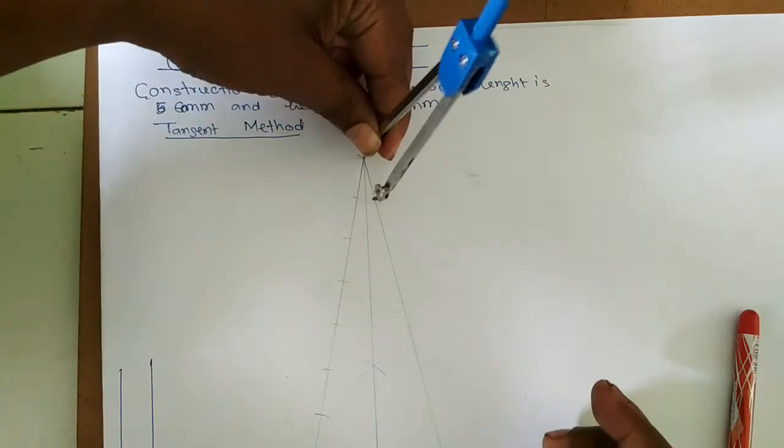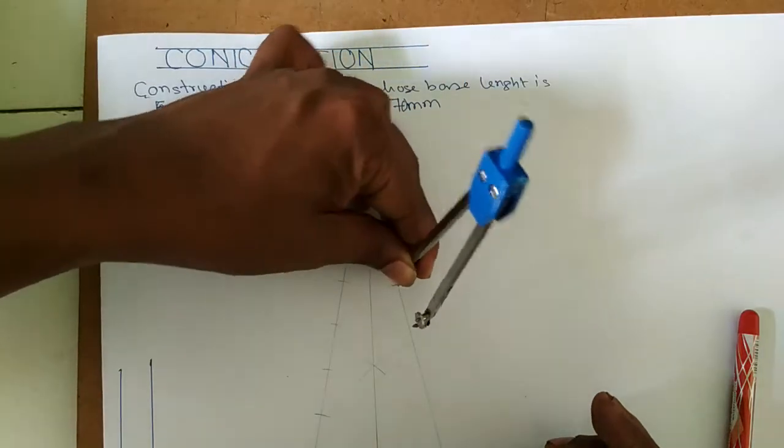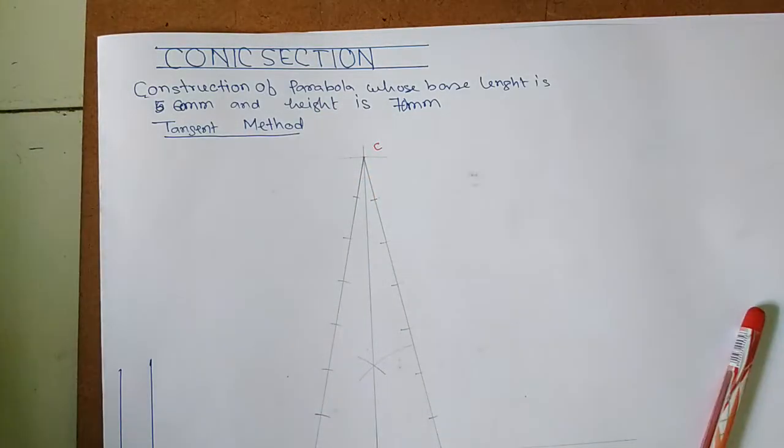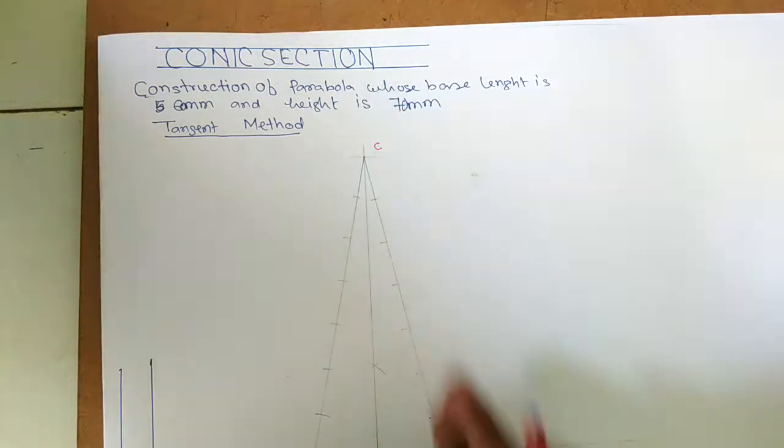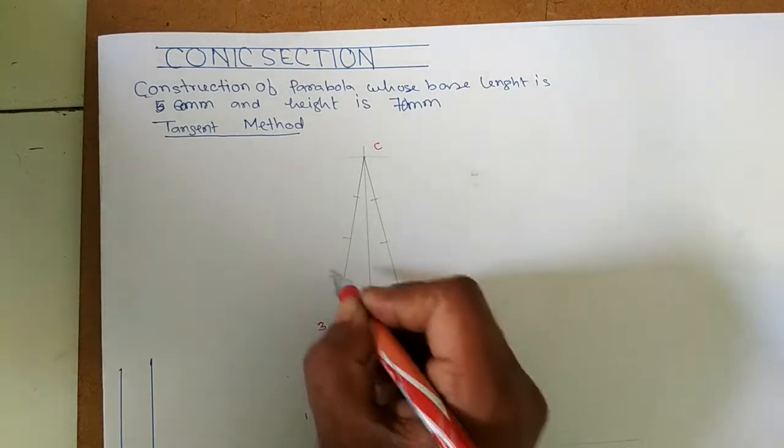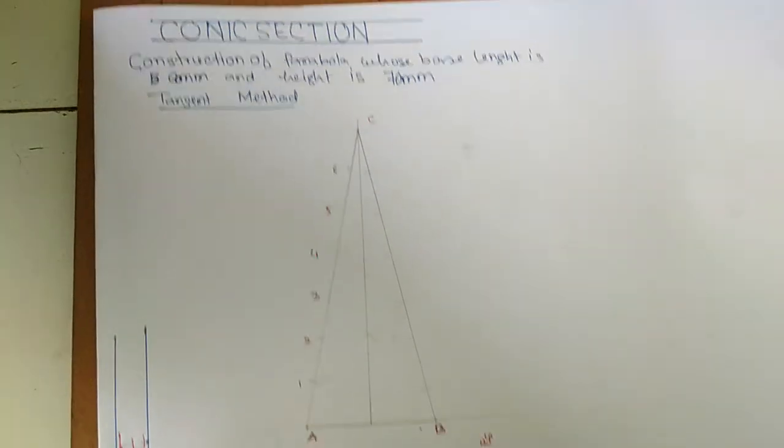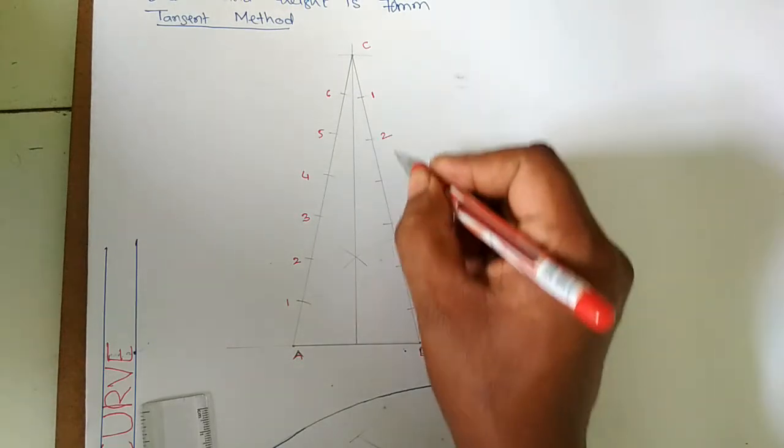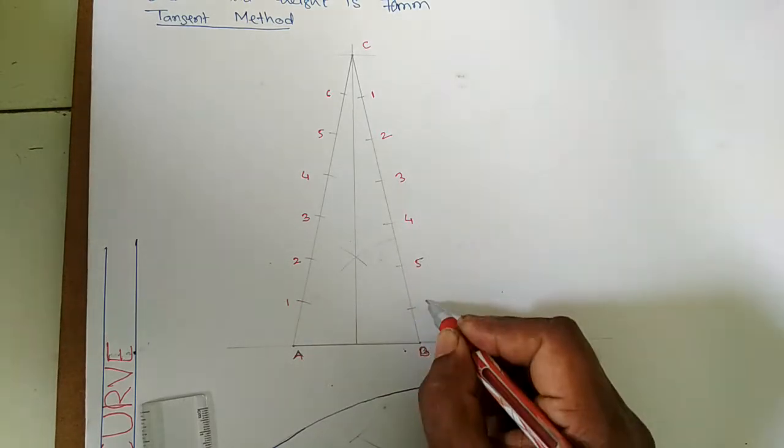We will divide into some equal segments and similarly we will divide this line into some equal segments. We'll name it 1, 2, 3, 4, 5, 6. So now we label this line as 1, 2, 3, 4, 5, 6.